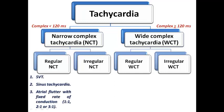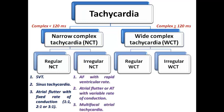Examples of regular narrow complex tachycardia include SVT, sinus tachycardia, and atrial flutter with a fixed conduction ratio such as 1:1, 2:1, or 3:1. Examples of irregular narrow complex tachycardia include AF with rapid ventricular rate, atrial flutter or atrial tachycardia with variable rate of conduction, and multifocal atrial tachycardia — a tachycardia frequently seen in patients with COPD.